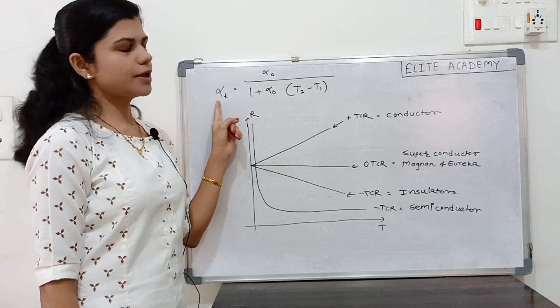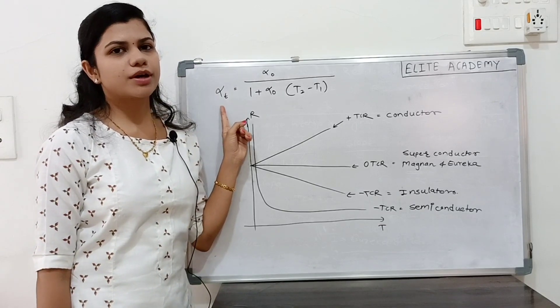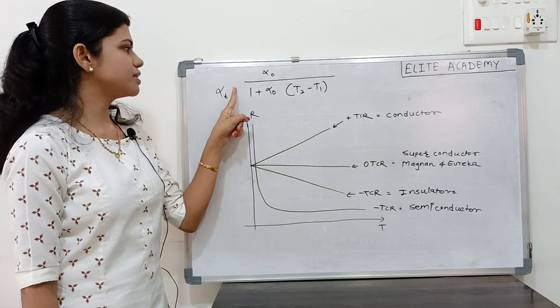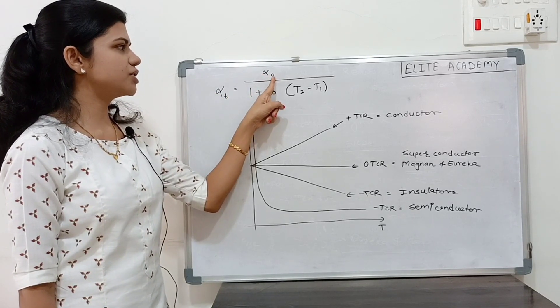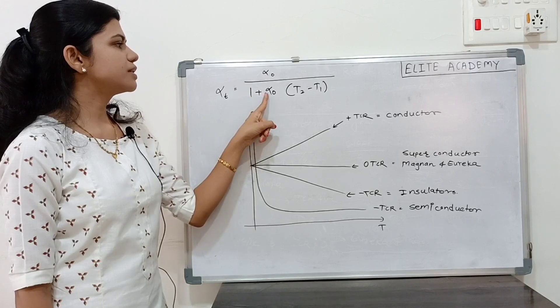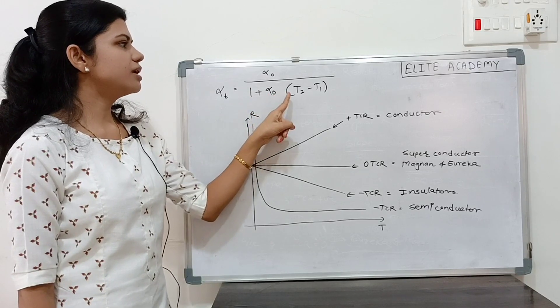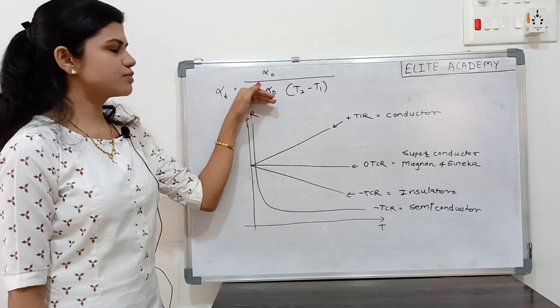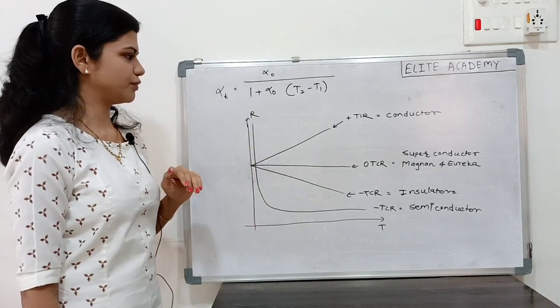This is very important formula from the MCQ point of view. Alpha T that means TCR at any temperature is equal to TCR at any sharing 1 plus TCR at original into T2 minus T1. Remember this formula this is very important from the MCQ point of view.